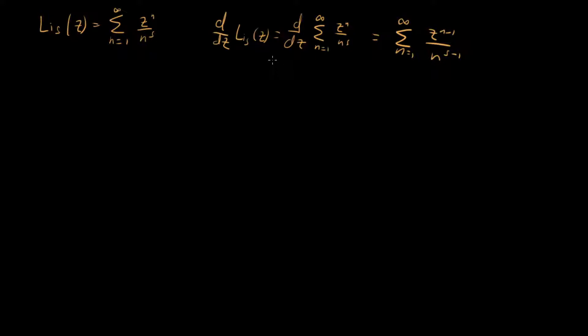And so what this means is that this derivative of our polylogarithm can actually be written as 1 over z times polylog s minus 1 of z. And I'll now rewrite this down here.